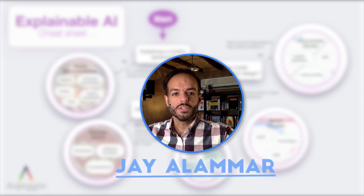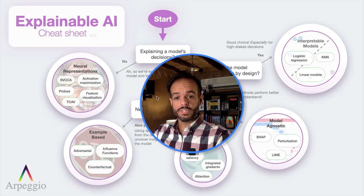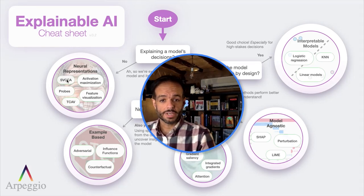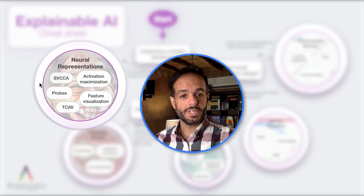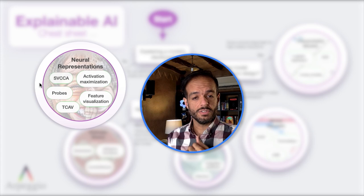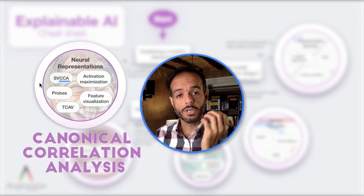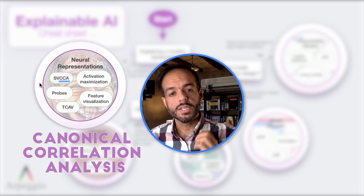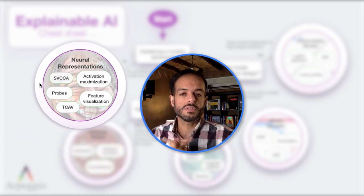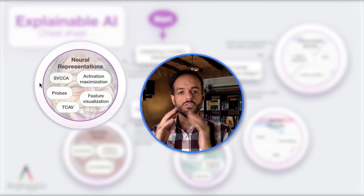Hello and welcome back. Today we'll continue talking about explainable AI and specifically about this method called SVCCA. The CCA here stands for canonical correlation analysis. This is a family of methods that we'll discuss, with SVCCA being just one of them.